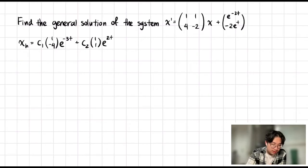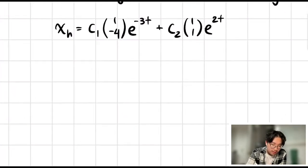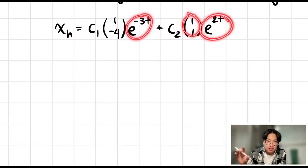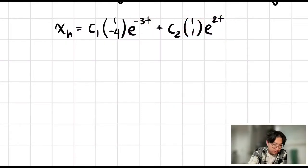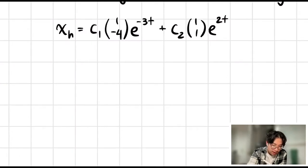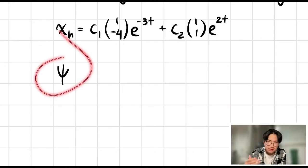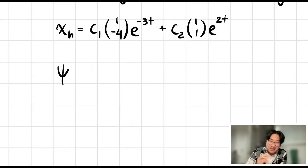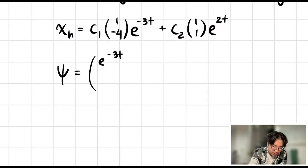We can get the fundamental matrix by multiplying the exponential function into the vector. We usually denote it with psi. And we know that this is equal to — the first column is e to the negative 3t and negative 4e to the negative 3t, and then the second column is e to the 2t and e to the 2t.